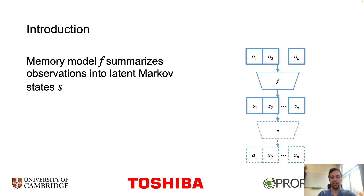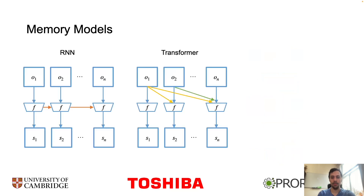What does this function f usually look like? In most prior work, f is either a recurrent neural network, called an RNN, or a transformer. When f is an RNN, it receives an observation and a recurrent state, denoted in orange, and produces a Markov state and an updated recurrent state.